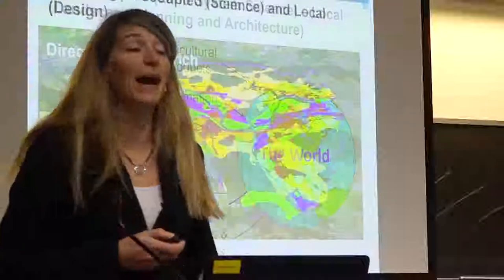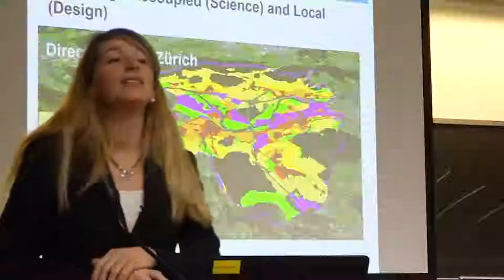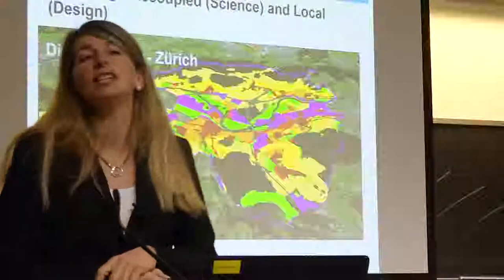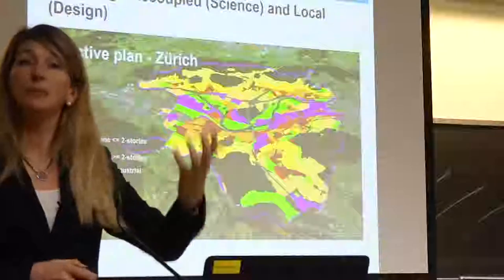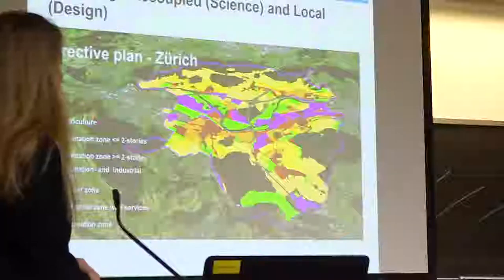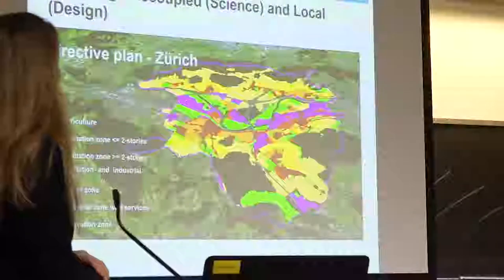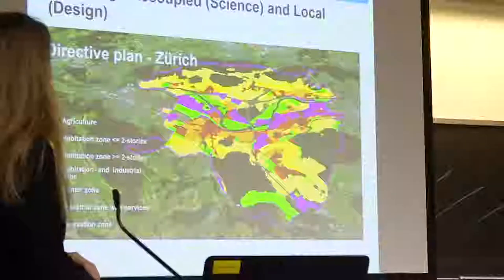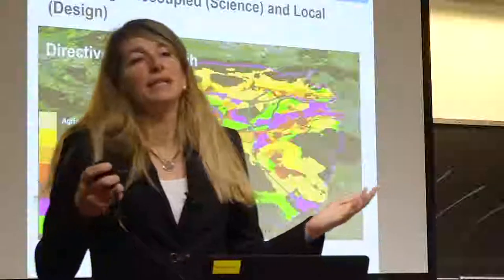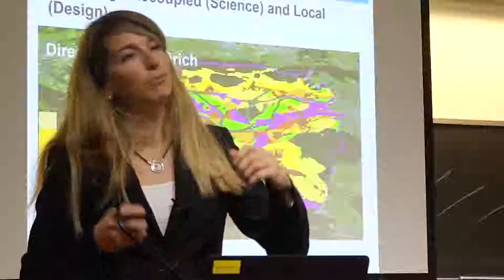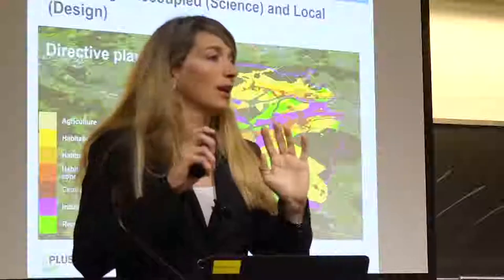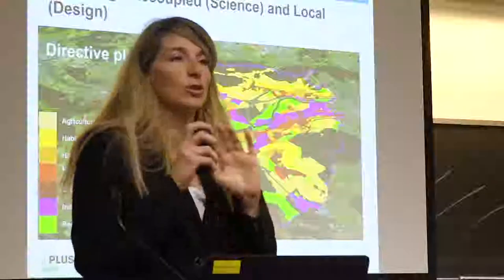Let me take you to an urban area — this is Zurich, a part of Zurich. You see the strategic plan, a directive plan binding for the planners. You see here some land use zones — concentrate on the red zone, the habitation, and the orange zone. As you know, in European cities, the goal is please densify, please develop in the city, no sprawling. In Switzerland, we cannot do any sprawling anymore. But with densification, we lose our green areas.